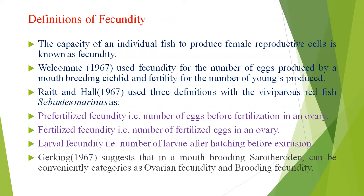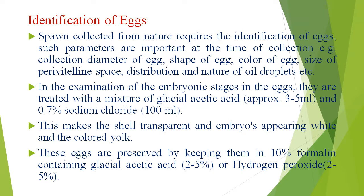Jerking 1967 suggested that in a mouth-breeding cichlodron, it can be conveniently categorized as ovarian and brooding fertility.